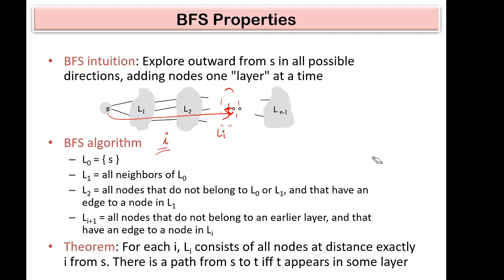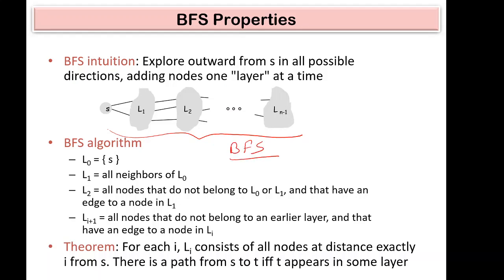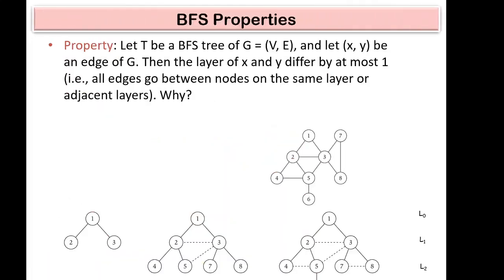The source is quite important in BFS. Every time you are given a source and a graph, you use that source to generate a BFS tree. The theorem says: at any level Li all nodes are i distance away from s and a path from s to that node exists. If a node does not appear in any layer, it is not reachable from s.